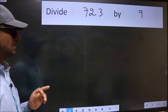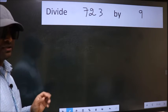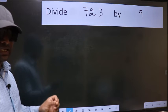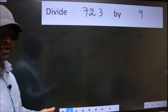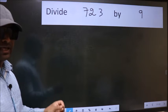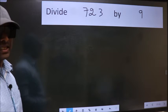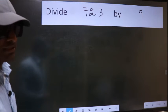Divide 723 by 9. While doing this division, many do this mistake. What is the mistake that they do? I will let you know. But before that, we should frame it in this way.